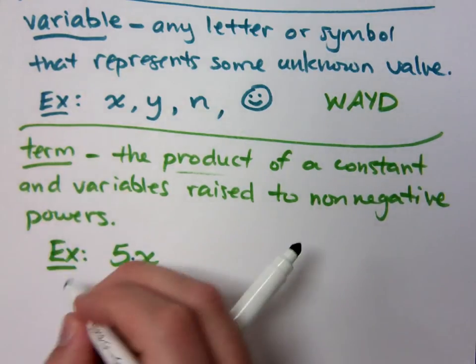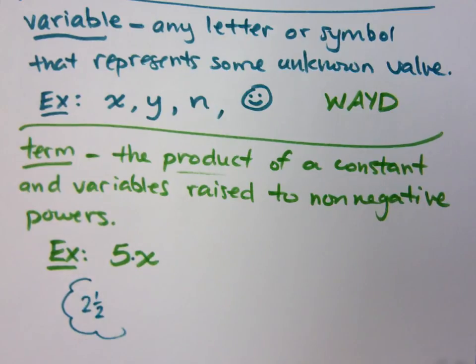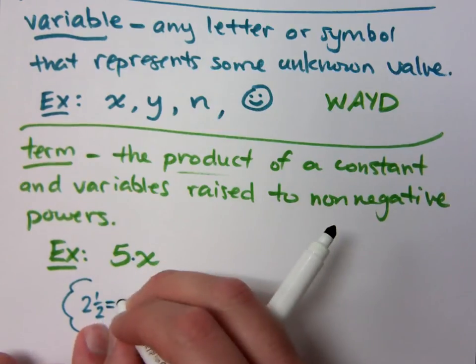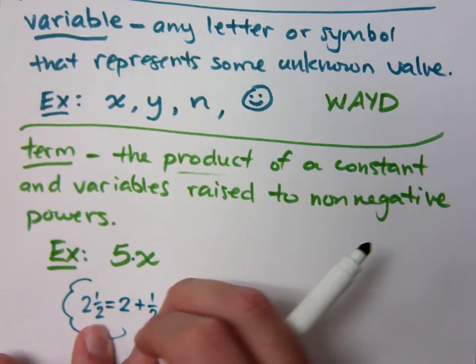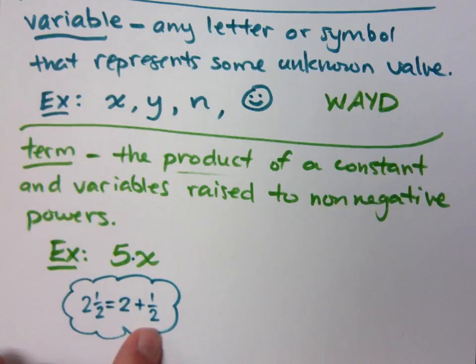For example, if I were to have this guy, if I were to write 2 and 1/2, the 2 and the 1/2 are right next to each other, but does that mean multiplication? What is the implied operation here? If it's not multiplication, what is it? It's understood to be addition. It's understood to be two wholes and half of another one, right? So this is one of those rare times when juxtaposition does not indicate multiplication.